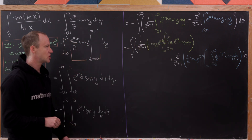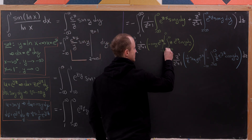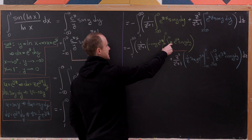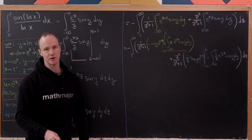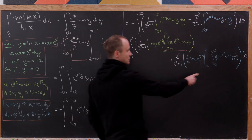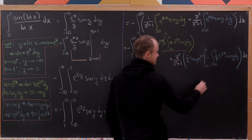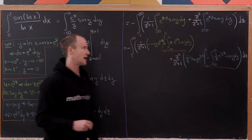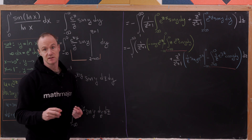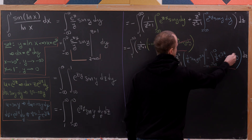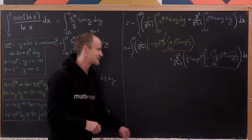Looking closely, the remaining cosine integral from the yellow piece is z over z squared plus 1 times the integral of e to the yz cosine y, while the blue piece contributes the same integral with a minus sign. These cancel each other out.